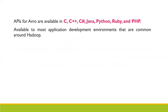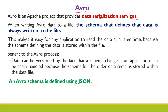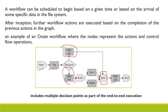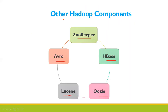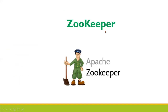Avro has implementations written in C, C++, C#, Java, Python, Ruby, and PHP — available for most application development environments common around Hadoop. These are the basic Hadoop sub-projects: Zookeeper, HBase, Uzi, Lucene, and Avro — the various Hadoop components.